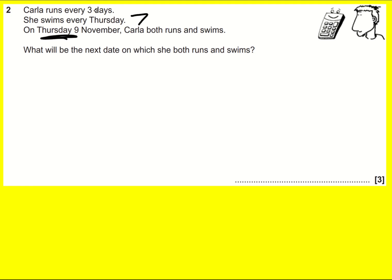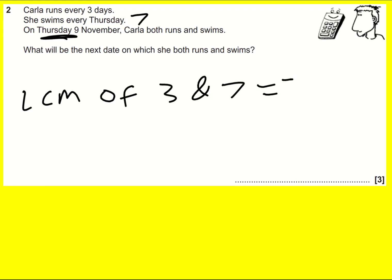We are looking for the lowest common multiple of three and seven. Because they don't share any common factors, that will be 21. So the LCM of three and seven is 21.